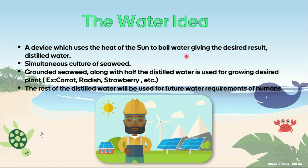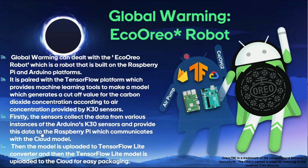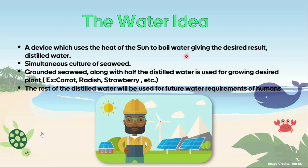Whatever remaining distilled water we have, we can do RO and use it as drinking water, satisfying the water requirements of humans. We know that only about 1% of water resources are fresh water that humans can use — the remaining 99% is not fresh water and contains salt which humans cannot consume.